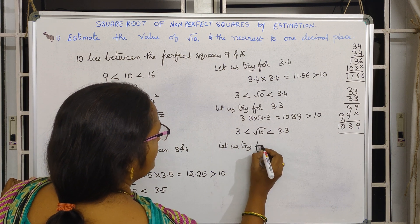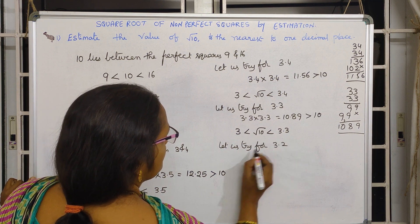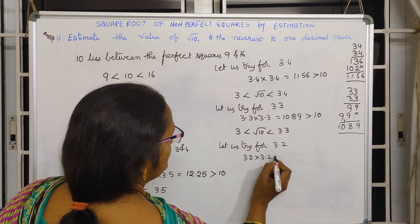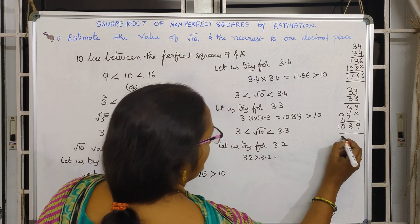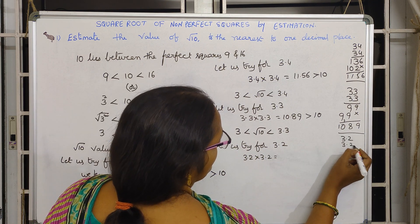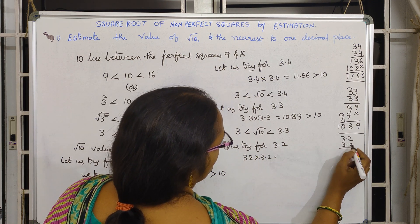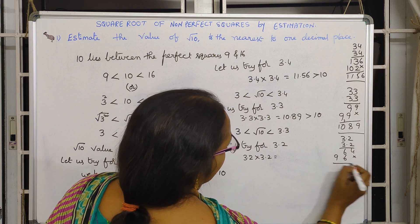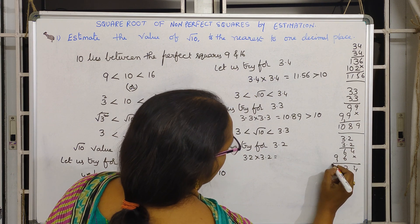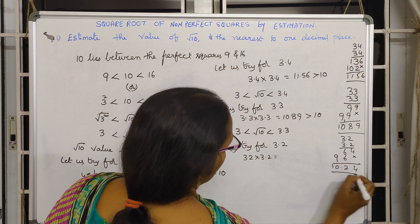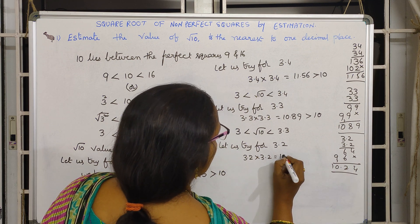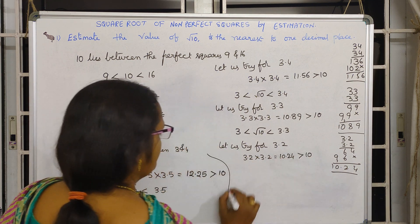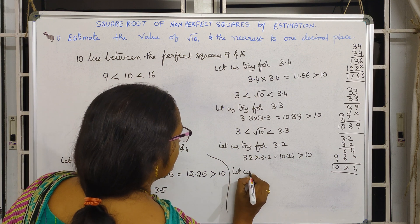Let us try further: 3.2 times 3.2. Multiplying: 4, 6, 6, 9, 4, 12 — that gives 10.24. This is also greater than 10. So let us try further.